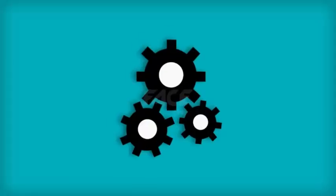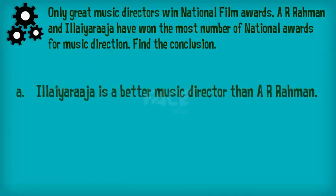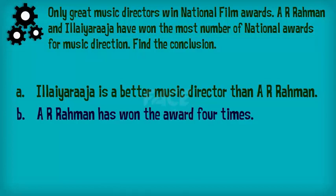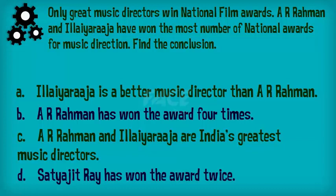Let's look at the following example: Only great music directors win national film awards. A. R. Rahman and Ilya Raja have won the most number of national awards for music direction. Which of the following statements is the best suitable conclusion to the argument? A. Ilya Raja is a better music director than A. R. Rahman. B. A. R. Rahman has won the award four times. C. A. R. Rahman and Ilya Raja are India's greatest music directors. Or D. Satya Jeet Ray has won the award twice.